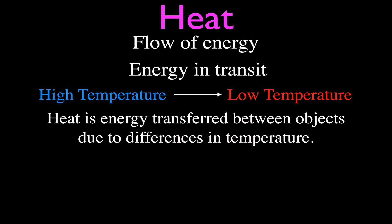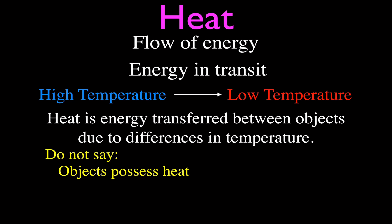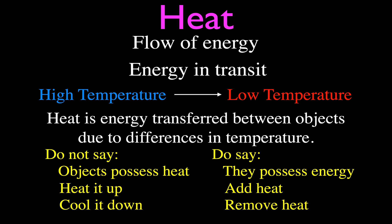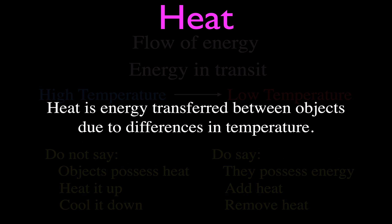Heat will only flow between two objects if they have a different temperature. We don't like to say that objects possess heat — we don't say an object has so much heat — because heat is a transfer of energy. Objects have internal energy, but not heat. If we want to heat something up we add heat; if we want to cool something down and lower the temperature, we remove heat from that object.